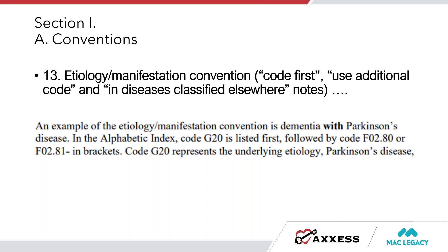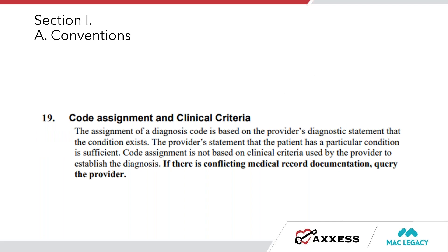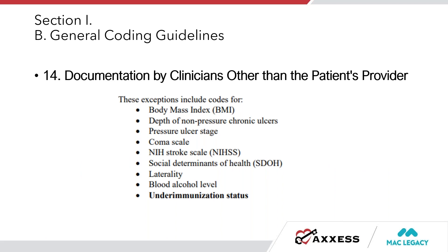One of the first changes is in the conventions under etiology and manifestation — just a minor word change in an example. They changed it from 'in' to 'with' Parkinson's, giving a little clarification. Additionally, under convention number 19, 'Code Assignment and Clinical Criteria,' the code assignment is not based on clinical criteria used by the provider to establish the diagnosis. If there is conflicting medical record documentation, we must query the provider.